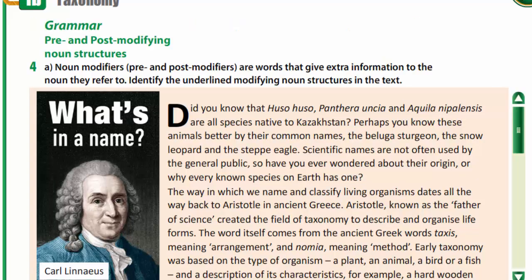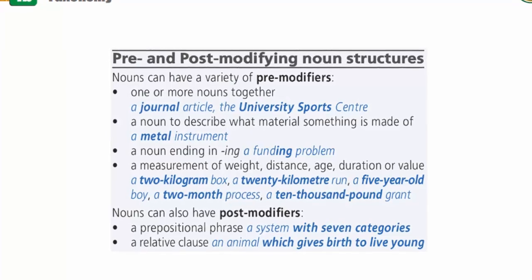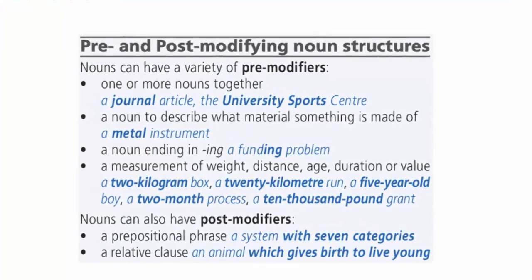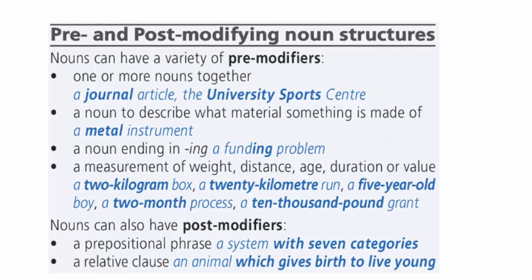Exercise 4 is devoted to grammar: pre- and post-modifying noun structures. Let's watch the theory. Nouns can have a variety of pre-modifiers: one or more nouns together, for example, journal article or university sports center; a noun to describe what material something is made of, for example, a metal instrument; a noun ending in "-ing", for example, a funding problem; a measurement of weight, distance, age, etc.